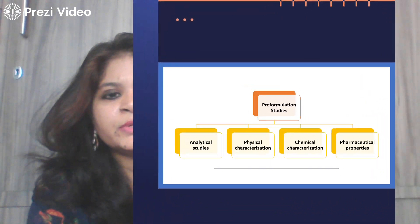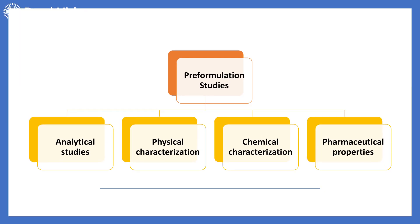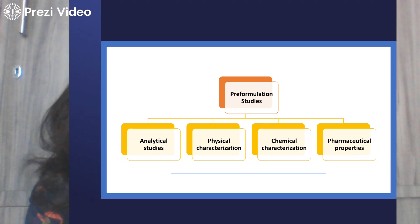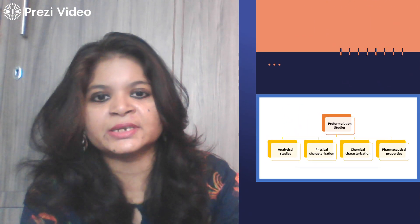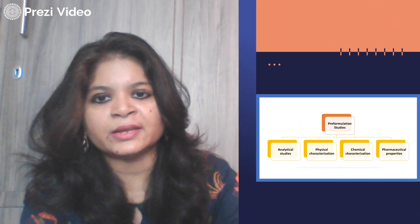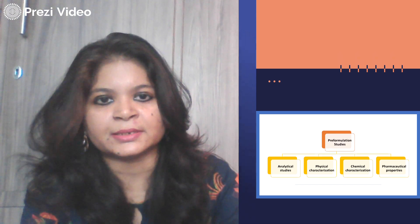When we carry out pre-formulation studies we basically focus on four areas: first, analytical studies; second, physical characterization; third, chemical characterization; and fourth, pharmaceutical properties. These four areas will be discussed in detail in our other sessions.